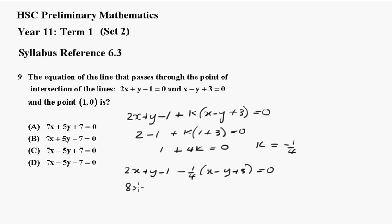That gives me 8x plus 4y minus 4 and this 4 will go out. Now removing the bracket here with a minus 1, that's minus x plus y minus 3 equals 0. And collecting like terms you get 7x plus 5y minus 7 equals 0.